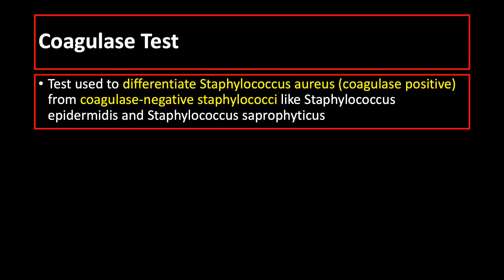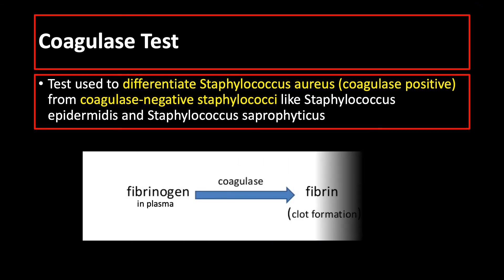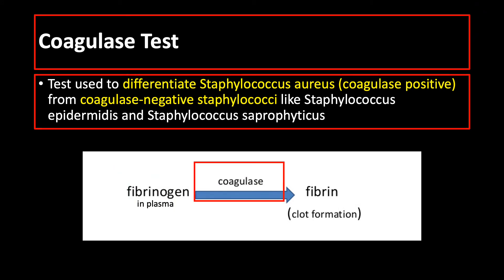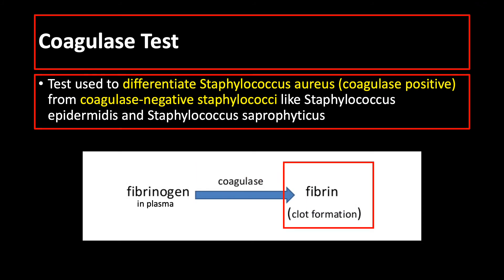The next test is the coagulase test, which is used to differentiate Staphylococcus aureus, which is coagulase positive, from coagulase negative Staphylococci like Staphylococcus epidermidis and Staphylococcus saprophyticus. The reagent is plasma containing fibrinogen, and in the presence of coagulase, the fibrinogen is activated to become fibrin, which can be seen by the naked eye as clot formation or coagulum.